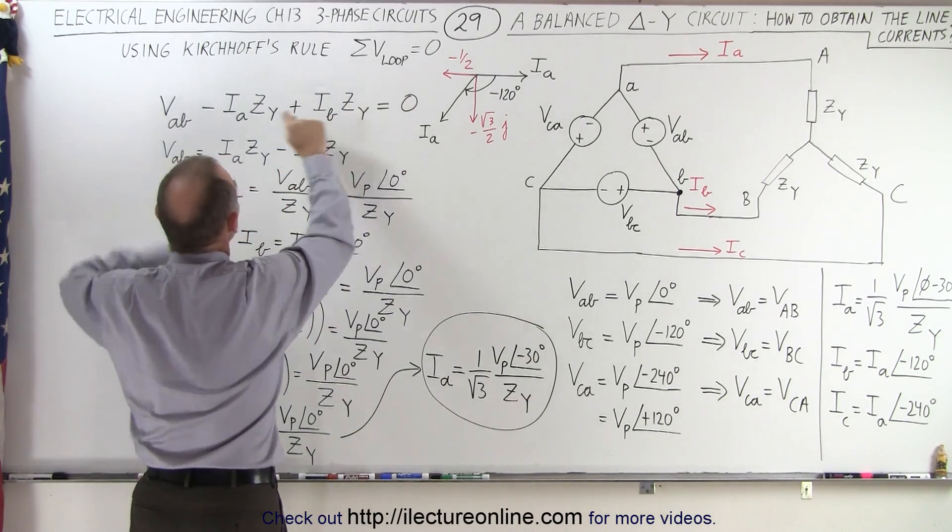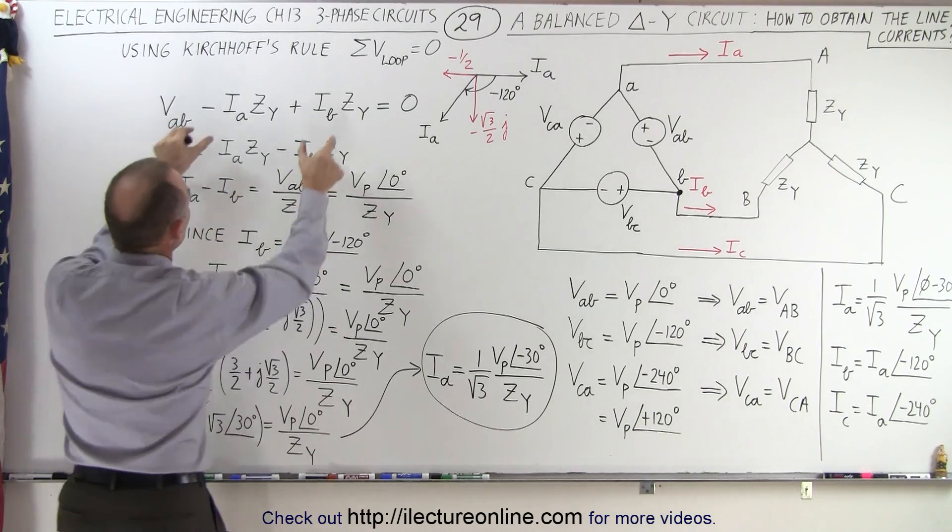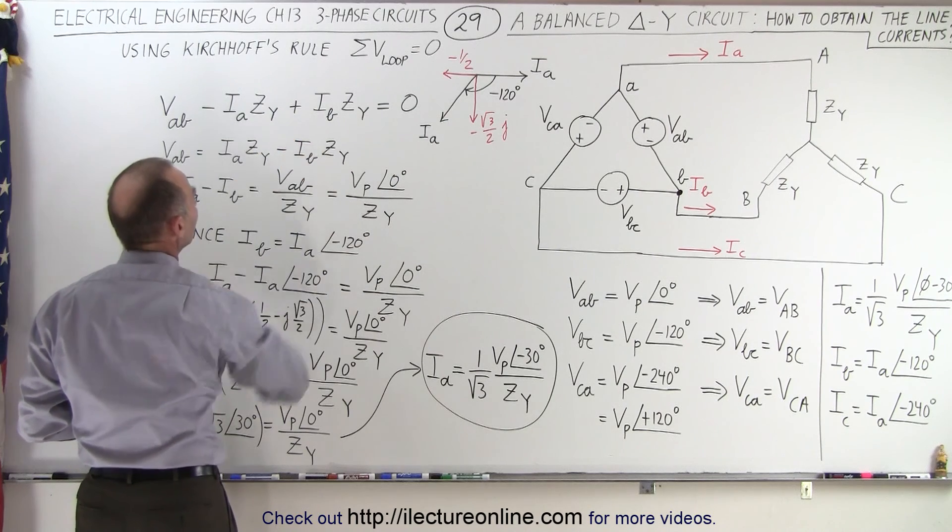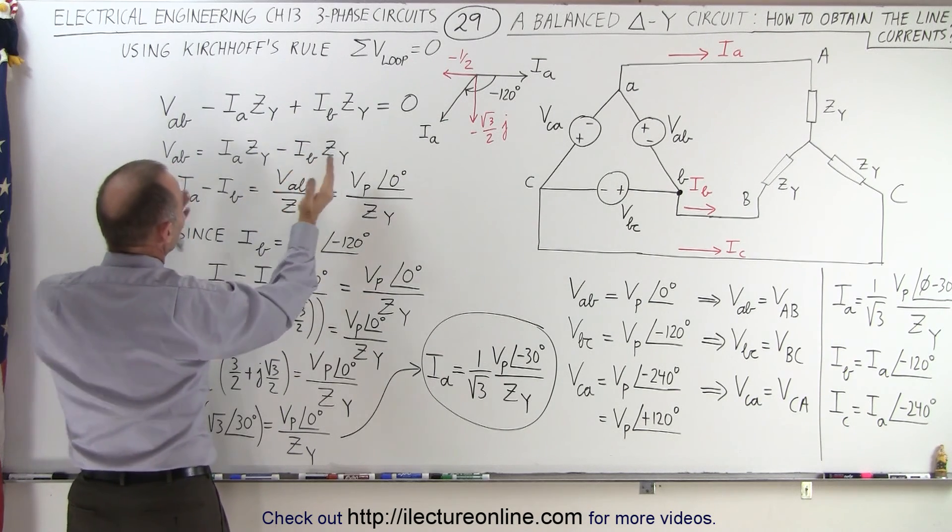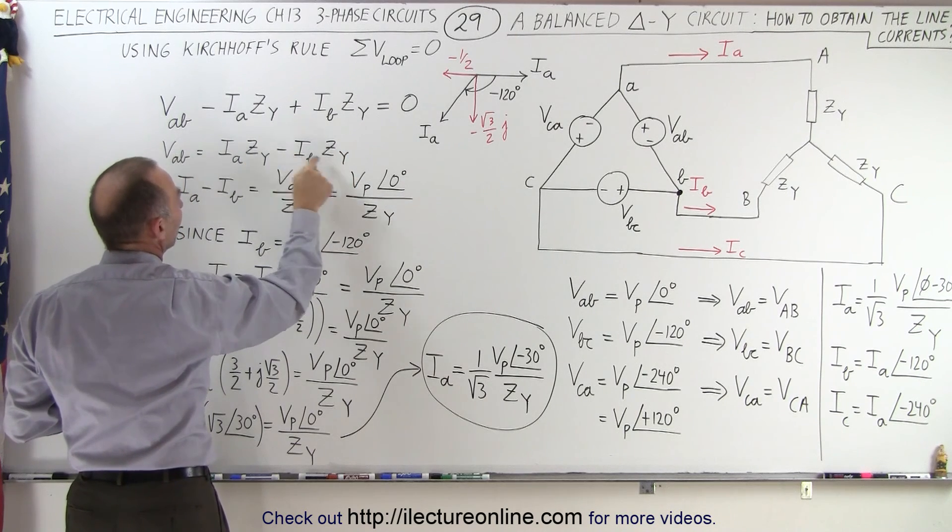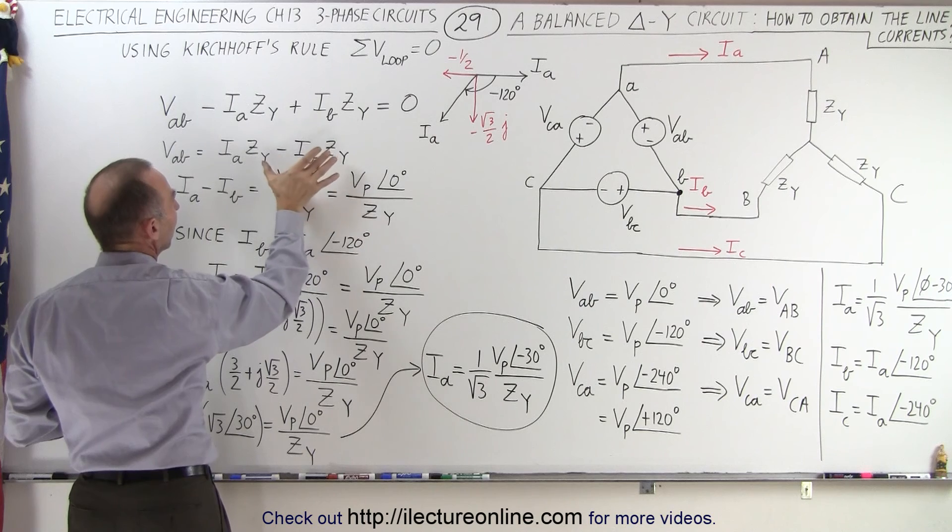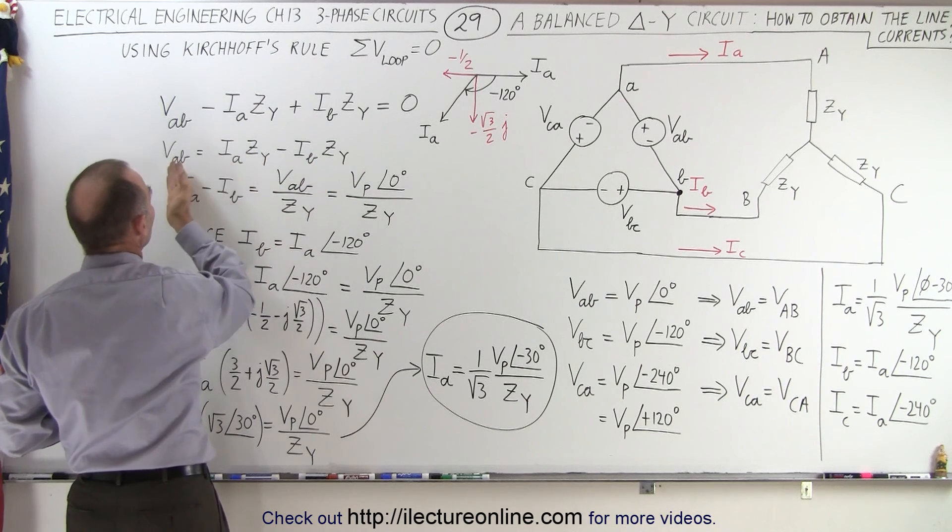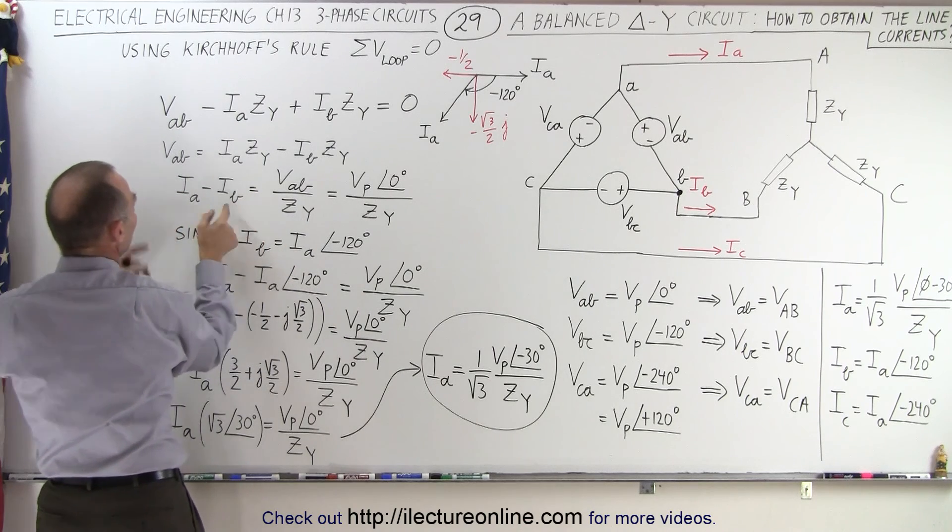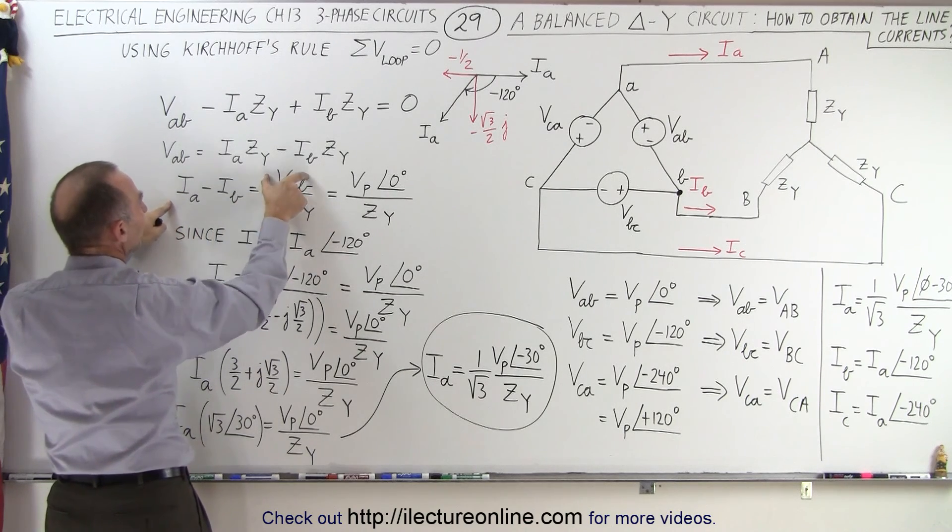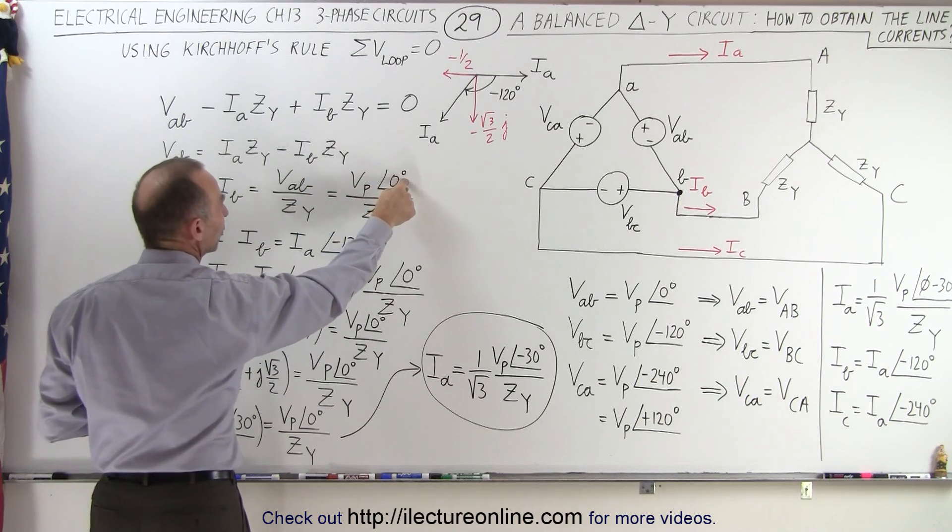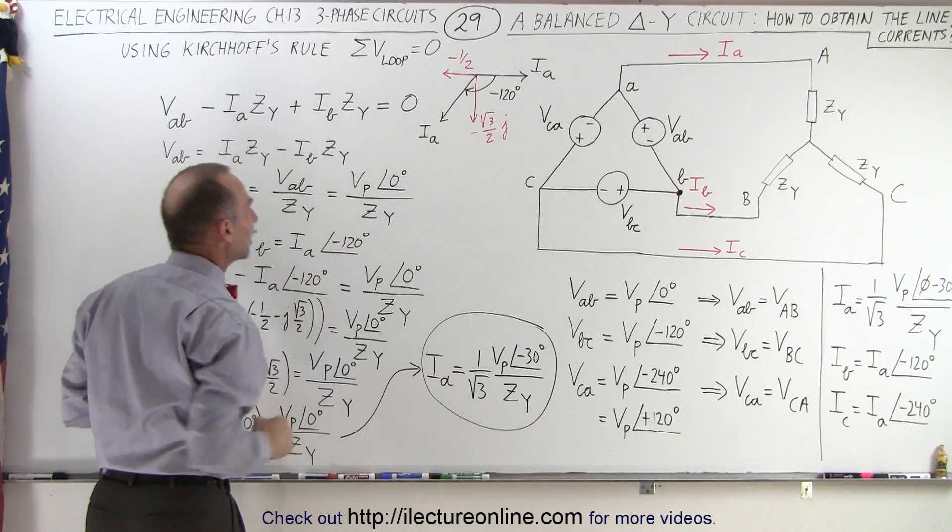Now we're going to take this equation and solve it for I sub A. First of all, we move these two terms to the right side. This becomes positive, this becomes negative. Then we reverse the equation and divide both sides by Z sub Y, because you can see that each term here has a Z sub Y. So we factor out Z sub Y, divide VAB by Z Y. And so we end up with IAB equals the voltage divided by the impedance, and the voltage AB is the same as the phase voltage with a zero degree phase angle divided by the impedance.